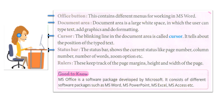Status Bar: The Status Bar shows the current status like page number, column number, number of words, zoom option, etc. Rulers: These keep track of the page margins, height and width of the page. MS Office is a software package developed by Microsoft. It consists of different software packages such as MS Word, MS PowerPoint, MS Excel, MS Access, etc.